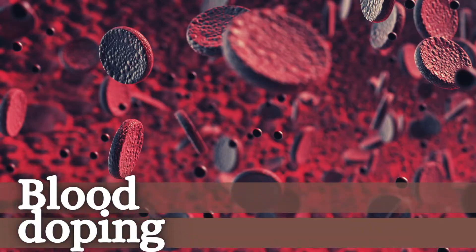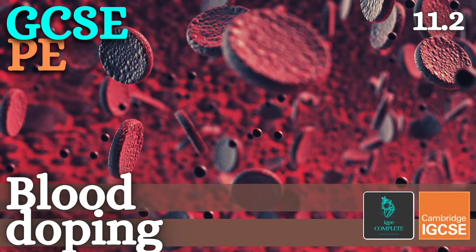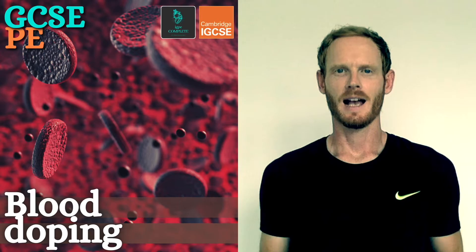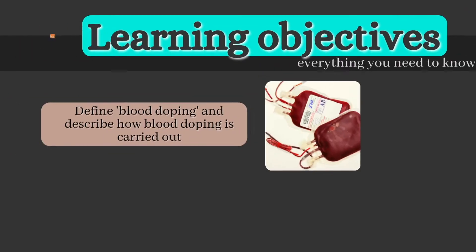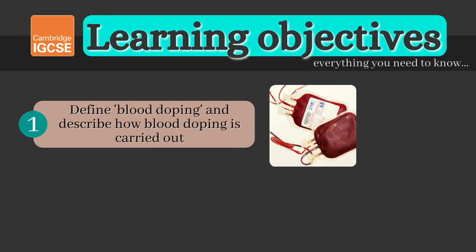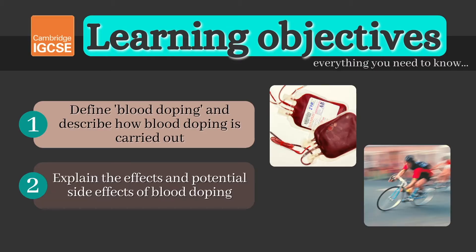Hello and welcome to another complete Cambridge IGCSE PE lesson, the second topic in chapter 11, blood doping. As always, we'll cover absolutely everything you need to know for your exam. Today you need to be able to define the term blood doping and describe how it's carried out, and explain the effects and potential side effects of blood doping techniques.